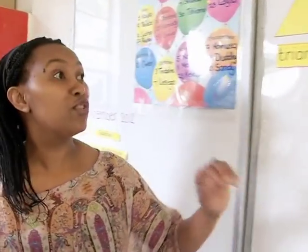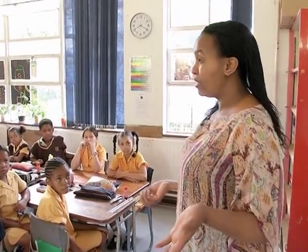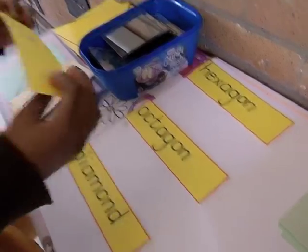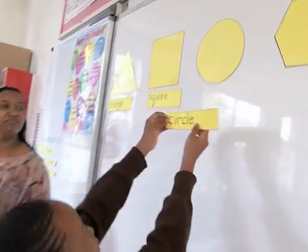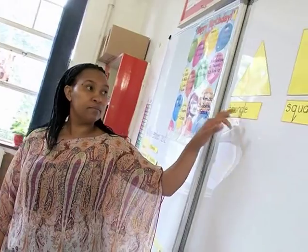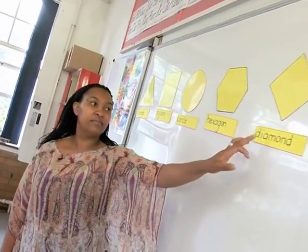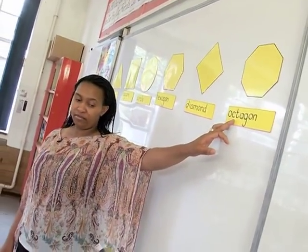Well done, Michael. Let's move on to the next shape. Circle. How many sides does a circle have? Grade 3s, when it comes to a circle it's a bit tricky because some people believe that a circle doesn't have any sides and some believe that a circle has infinite sides. We went through the different 2D geometrical shapes — triangle, square, circle, hexagon, diamond, octagon.